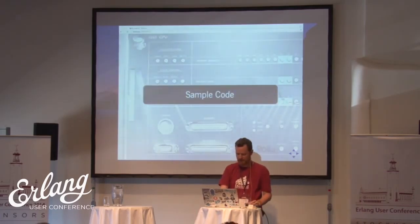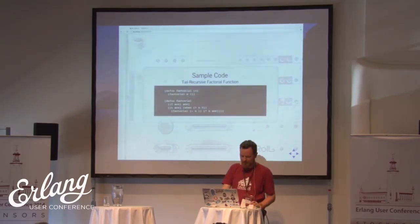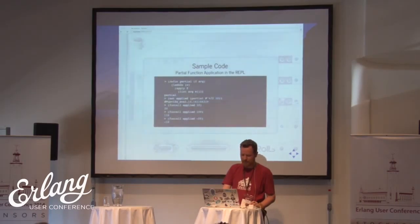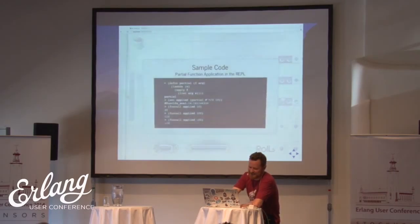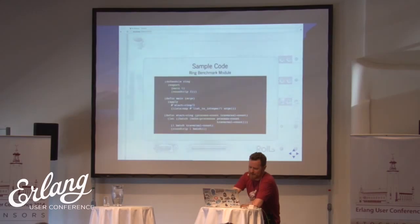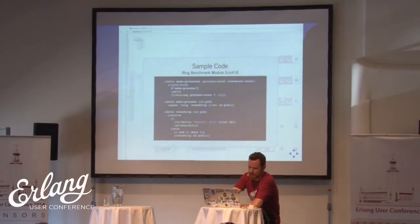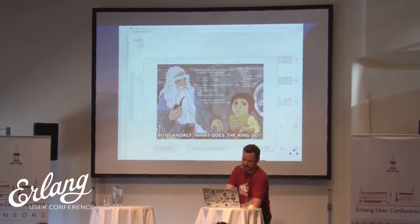Some sample code now that the idioms are done. Dot product — a very elegant implementation. Tail recursive factorial. Partial function application in the REPL. And this is the first part of the ring benchmark module — taken from the one hosted on debian.org. There's the second part of it. Pretty standard. And it performs almost identically to the pure Erlang one.